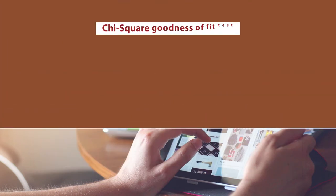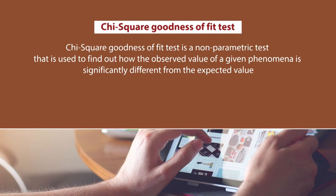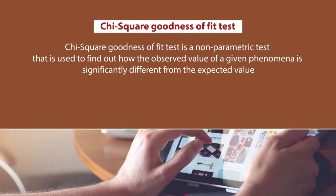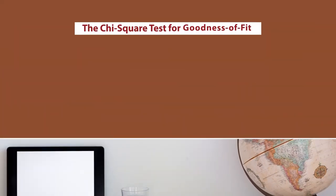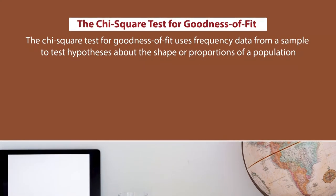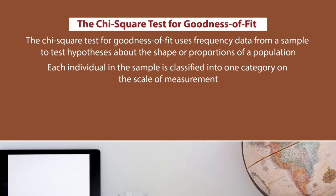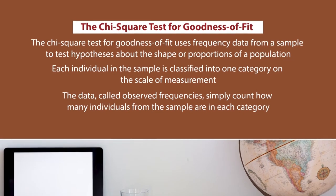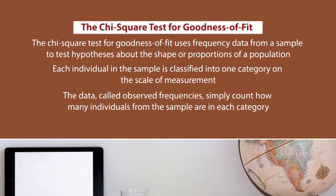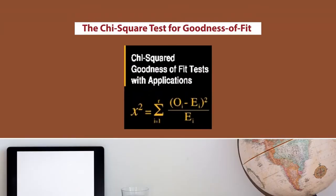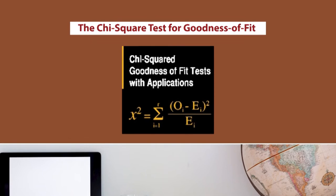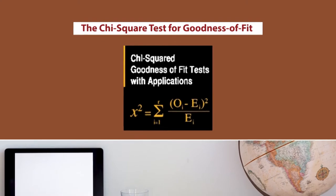The Chi-square goodness of fit test is a non-parametric test used to find out how significantly the observed value of a given phenomenon differs from the expected value. In this test, sample data is divided into intervals, and it uses frequency data from a sample to test hypotheses about the shape or proportion of a population. Each individual in the sample is classified into one category; the data, called observed frequencies, count how many individuals from the sample are in each category. The formula is: χ² = Σ (O − E)² / E, where the sum varies from i=1 to k.